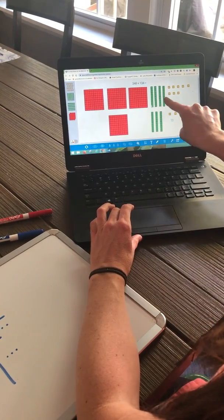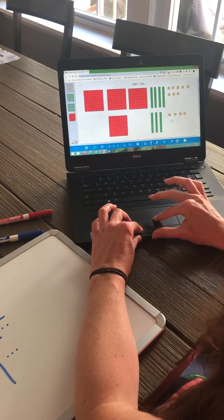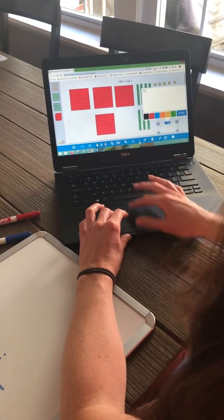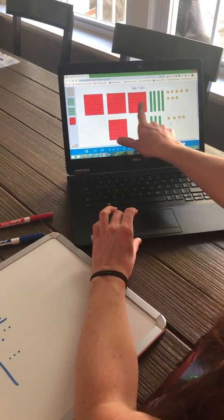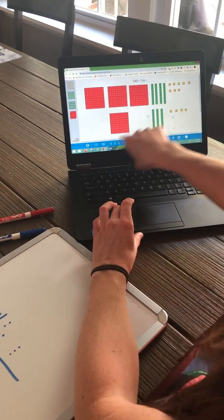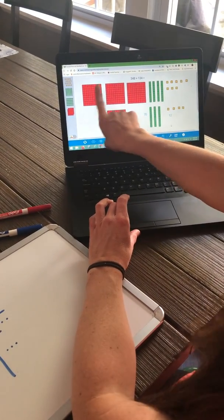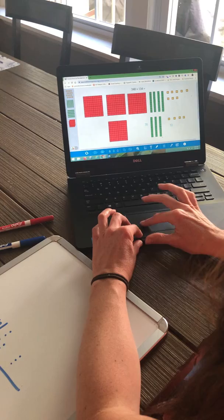But that's worth 10, 20, 30, 40, 50, 60, 70. And I've got 3 100s plus 100, which is 4 100s, which is worth 100, 200, 300, 400.